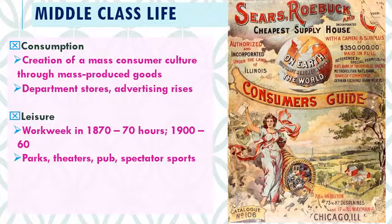Here is the Sears Roebuck and Company catalog — the cheapest supply house in the world. The Sears catalog was one of the most sought-after pieces of reading material for children in this time period, full of wonderful things you could order by mail. Sears would ship you anything, including a house — you could actually buy the plans and materials for an entire house. Sears today maintains a website with all those house plans.